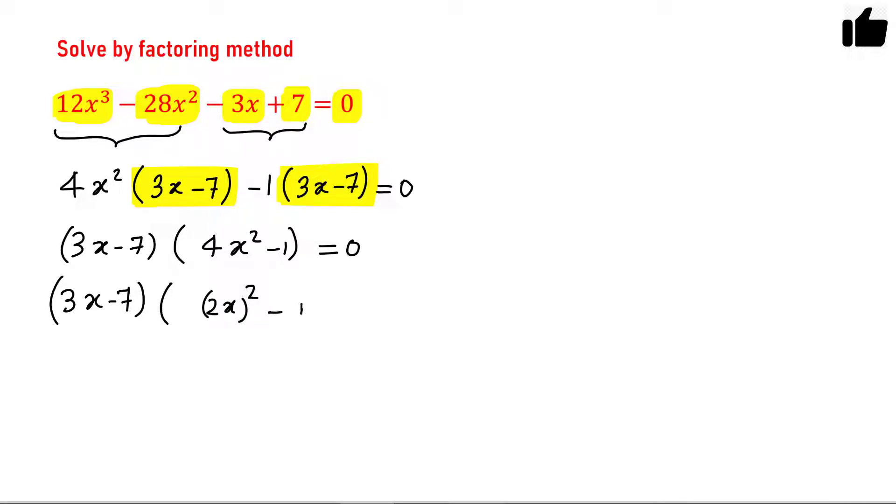Now I can further rewrite this as 3x - 7 and this can be written as (2x)² - 1² equals 0. If you remember the formula a² - b² equals (a + b)(a - b), let us use this formula here.